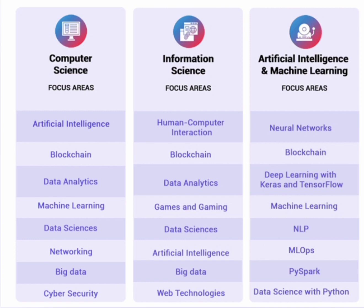To be clear, all the branches are similar — 70 to 80 percent of the syllabus is common. Artificial intelligence is a subject inside computer science, it is also in information science, and it is the main focus area of the AI and ML branch. So AI is a common subject across all three branches.